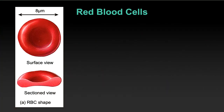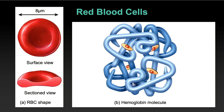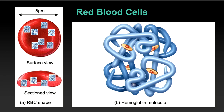One red blood cell — one biconcave disc. You can see the concavity when sectioned through. The constituent elements important for gas exchange are hemoglobin — a giant globular protein. Importantly, each red blood cell does not only have one hemoglobin molecule. Each red blood cell is actually packed full of individual hemoglobin molecules — there are a lot of these proteins crammed into each red blood cell. So red blood cells contain a large concentration of hemoglobin.